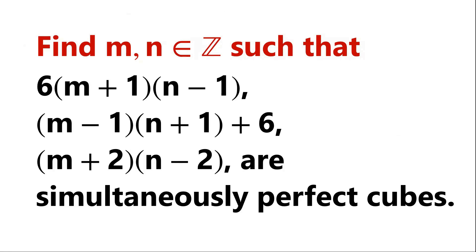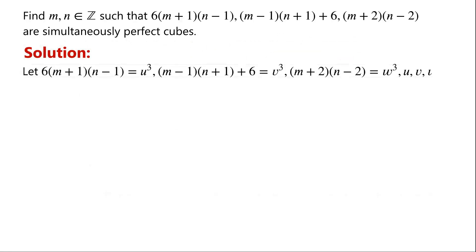Find integers m and n such that the three algebraic expressions are simultaneously perfect cubes. We let the three algebraic expressions equal u cubed, v cubed, and w cubed, respectively, where u, v, and w are integers. Then by expanding the algebraic expressions, we have: